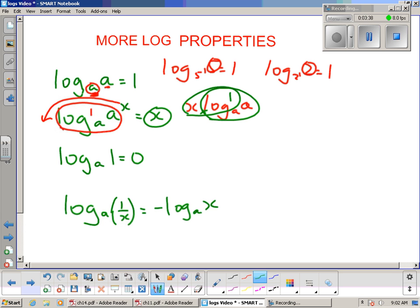This third property here, log to the base a of 1—well, it asks: what power have we got to put the base of a to, to get 1? You can see in this little section here, a to the zero would equal 1.